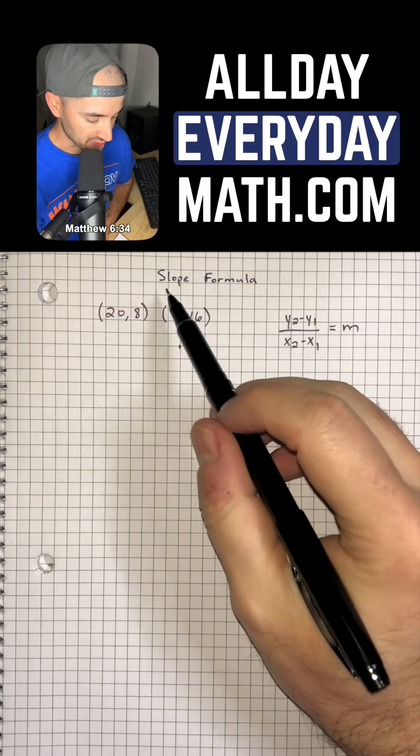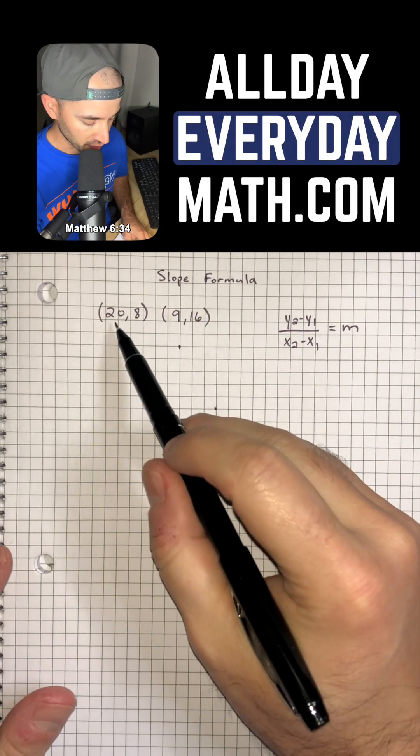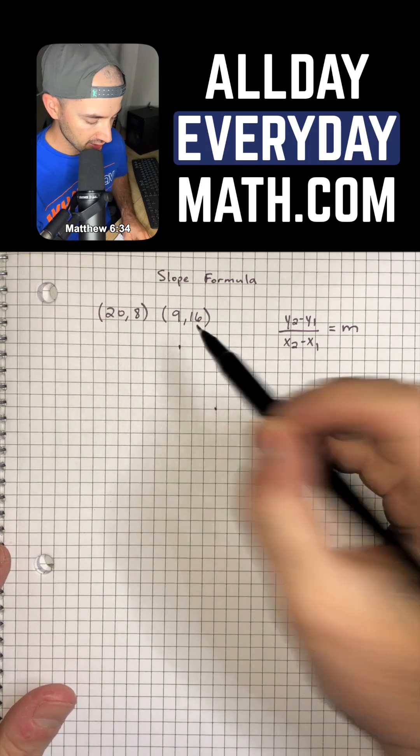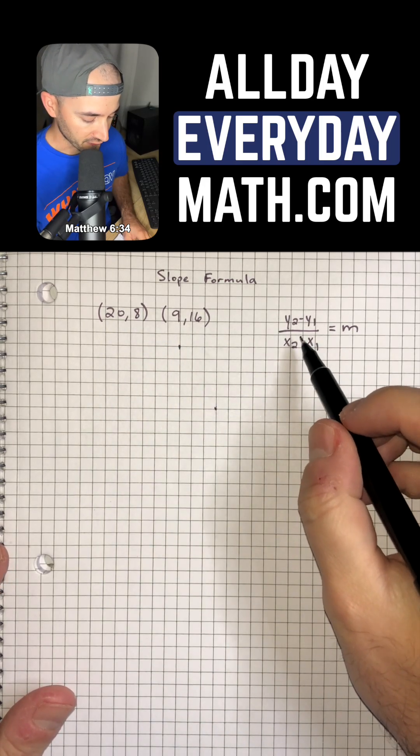So this problem is all about using the slope formula to find the slope from two points. We have the points (20, 8) and (9, 16), and we're going to use the slope formula to find the slope.